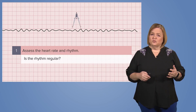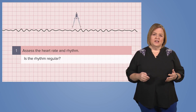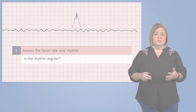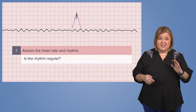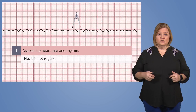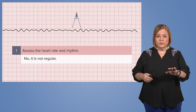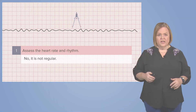If we're going to look at the rhythm, that is also not possible because we don't see regular QRSs, so we can't identify that the rhythm is regular. And here's a tip: it's not in ventricular fibrillation.